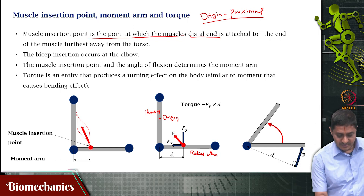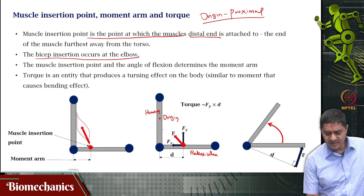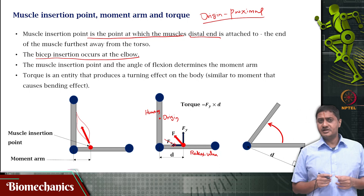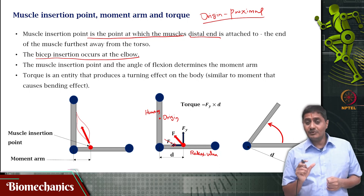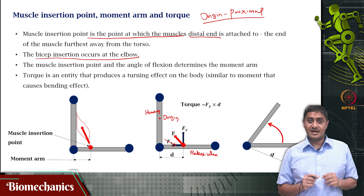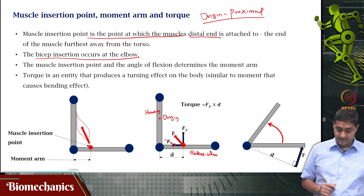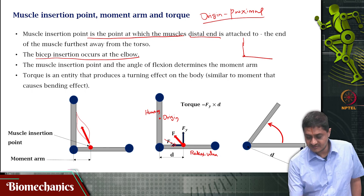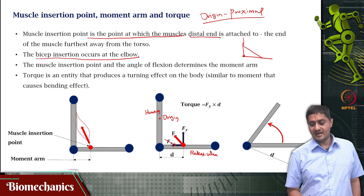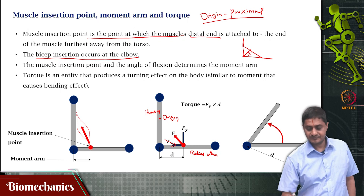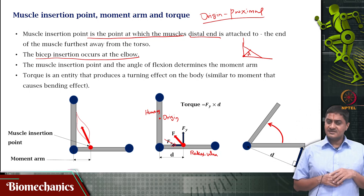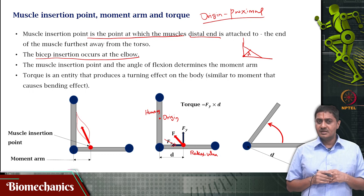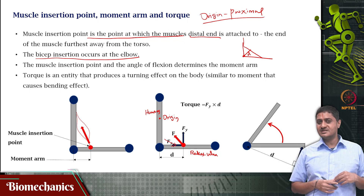The biceps insertion occurs very close to the elbow. The moment arm — what is the moment arm? In mechanics, the moment arm is the perpendicular distance between the axis of rotation and the line of action of force. Suppose this is the system under discussion and that is the axis of rotation, and that is the line of action of force — this is the moment arm. This raises the question: does the moment arm remain constant? So far we have been speaking about it as if it is always the same.